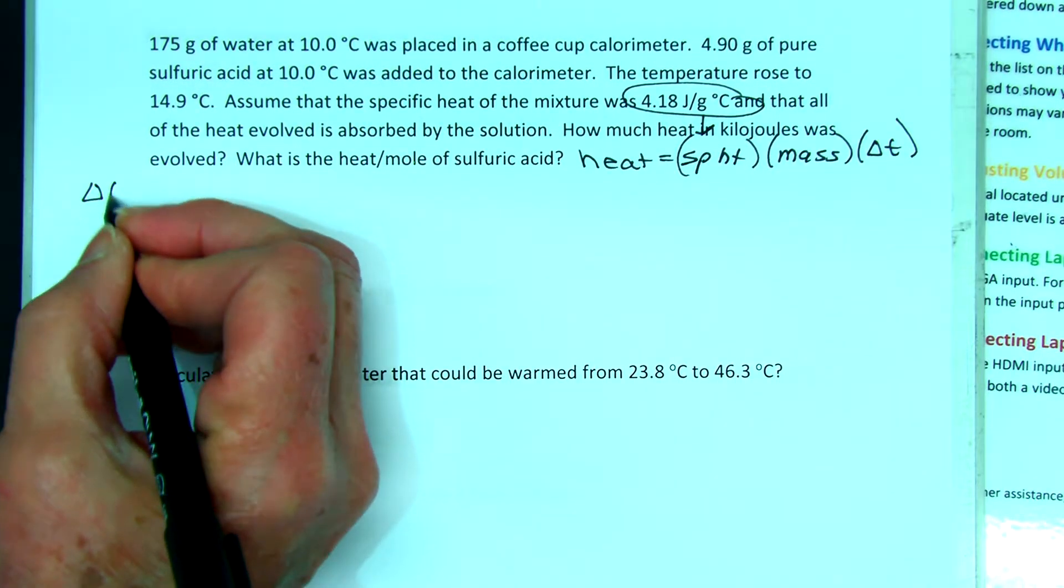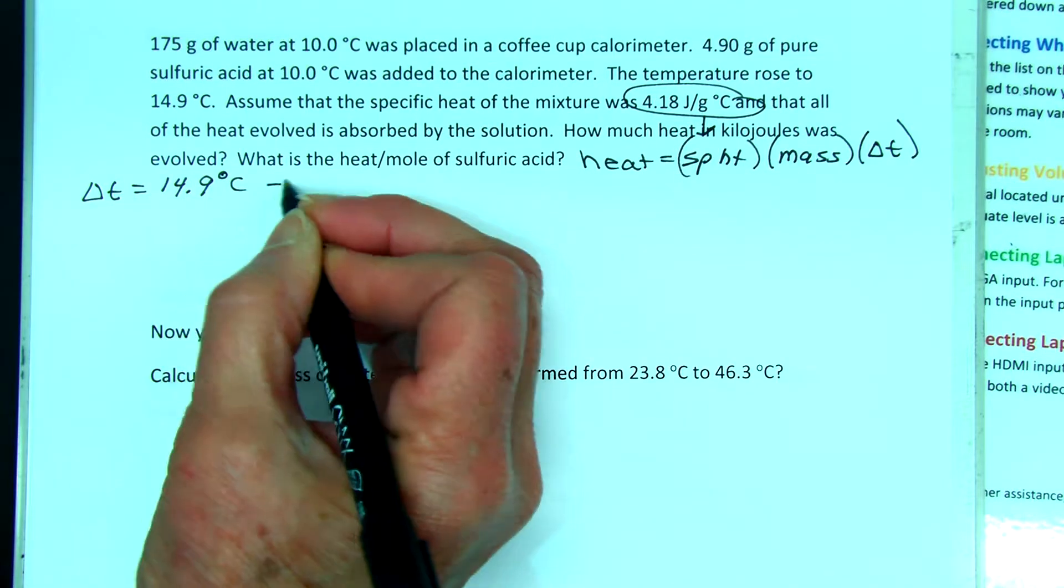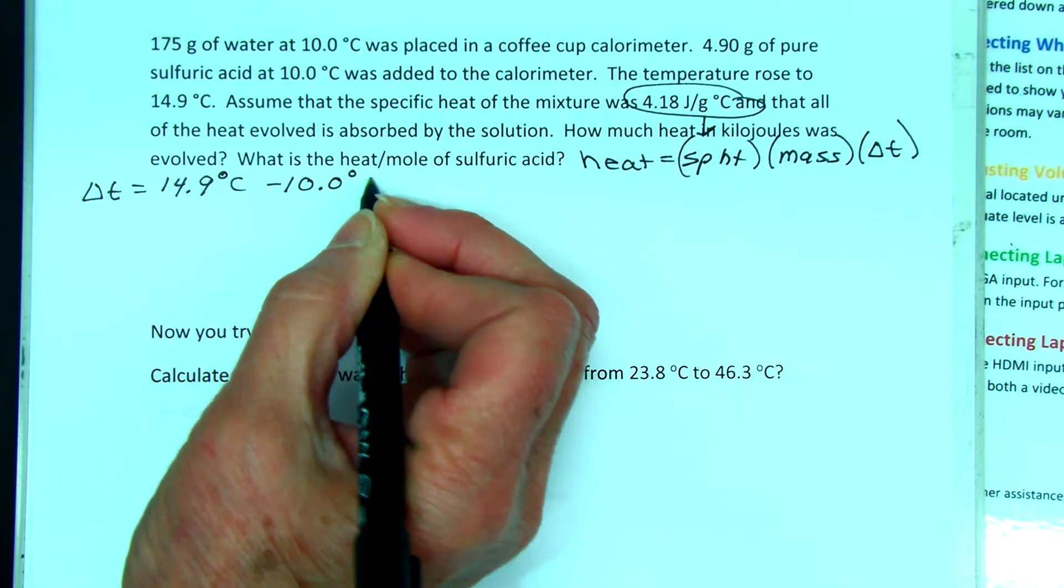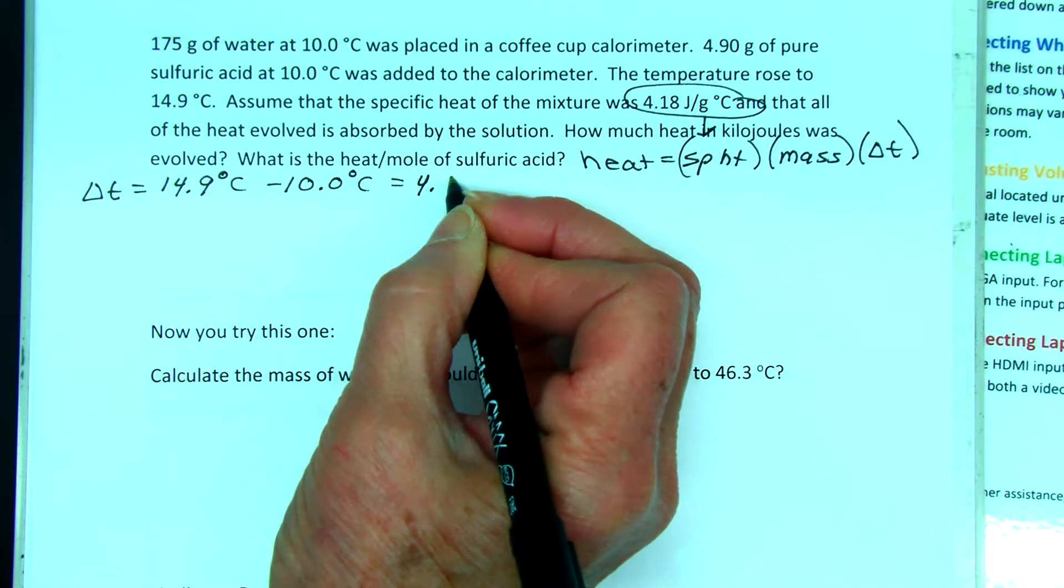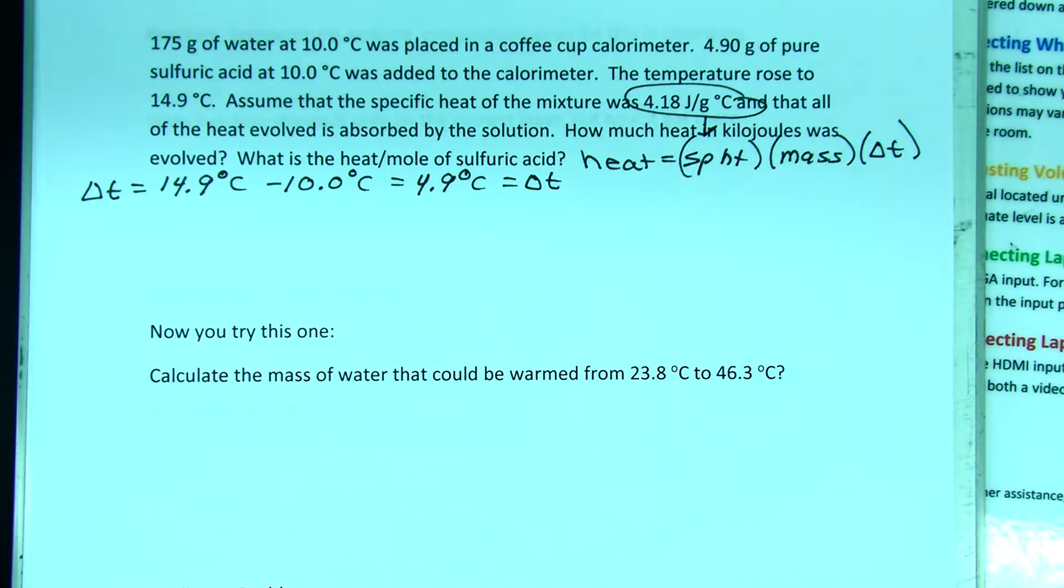delta T. We know the final temperature, 14.9 degrees C, minus the initial, 10 degrees C. So my temperature change, delta T, is 4.9 degrees C. What's my mass?